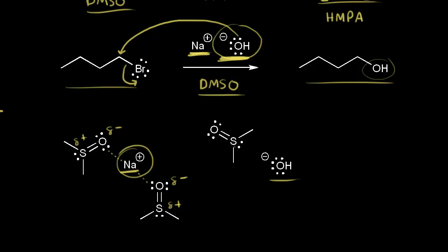The hydroxide ion itself is not solvated by a polar aprotic solvent. You might think the partially positive sulfur could interact with our negatively charged nucleophile. But remember, we have these bulky methyl groups, and because of steric hindrance that prevents our hydroxide ion from interacting with DMSO. So the hydroxide ion is all by itself, which increases its effectiveness as a nucleophile — it's better able to attack the alkyl halide.